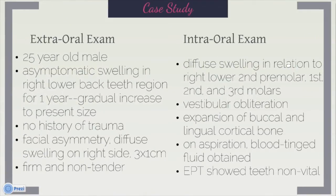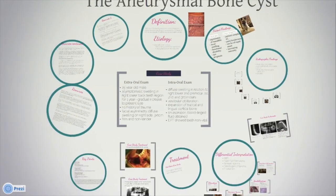A 25-year-old male patient presented at Rama College of Dentistry in India with asymptomatic swelling in the right lower back teeth region for one year with a gradual increase to its present size. There was no history of trauma, and he presented with facial asymmetry and a diffused swelling on the right side with a 3x1 firm and non-tender lesion. The intraoral exam showed diffuse swelling in relation to right lower second premolar, first and third molars, vestibular obliteration, and expansion of buccal and lingual cortical bone. On aspiration, blood-tinged fluid was obtained, and the EPT showed non-vital. This case will be followed along our entire presentation to show pictures of the radiographs and the case treatment.